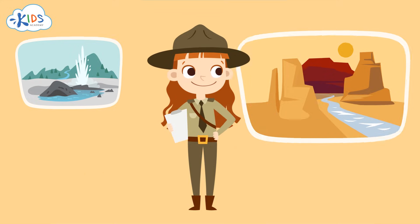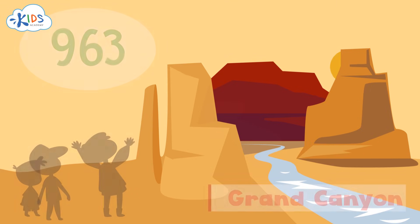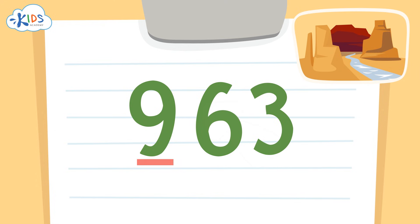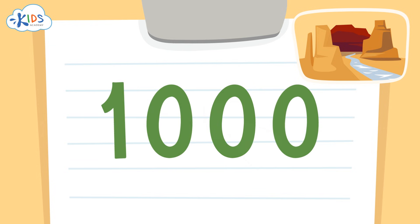The Grand Canyon saw 963 visitors. We'll use the strategy of underlining the hundreds place and drawing an arrow to the tens place again. I see a six in the tens place. I know if it's five or higher, we have to round up. The nine in the hundreds place is underlined, so we have to round up the 900 to 1,000, because after 900 we have to change to thousands. When rounding to the hundreds place and we have to round up to thousands, the numbers in the hundreds, tens, and ones places become zeros.